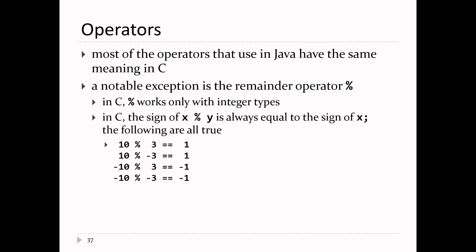The remainder operator in C behaves slightly differently than in Java. The first difference is that the remainder operator in C only works with integer types. Java allows you to take the remainder using doubles or floats — floating-point types — but C does not. In C it only works with integer types.